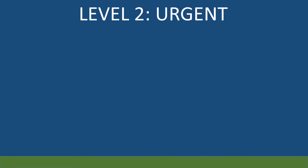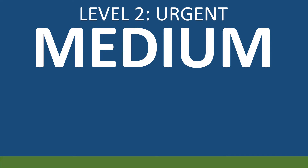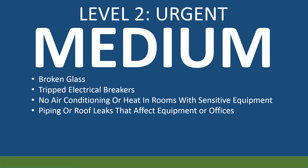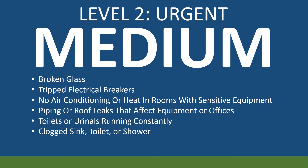What once was level 2 urgent is now level Medium. Use this priority when urgent situations pose a threat of personal injury, equipment damage, or a serious disruption of town operations. Whenever possible, urgent work orders should be completed within 24 to 48 hours. Examples include, but are not limited to: broken glass, tripped electrical breakers, no air conditioning or heat in rooms with sensitive equipment, piping or roof leaks that affect equipment or offices, toilets or urinals running constantly, clogged sink, toilet, or shower, and ADA compliance issues. Graffiti requests are dispatched as soon as possible, and a technician should respond within 8 to 24 hours.